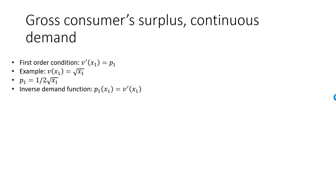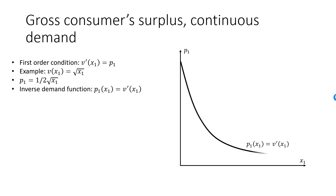This also means that if I want to draw the demand curve with p1 on the y-axis, I simply draw a graph of V prime. In my example, with V equal to square root of x1, the demand curve is the graph of 1 over 2 square root of x1. Note that since V is strictly concave, V prime must be strictly decreasing. That is, the demand curve will be strictly downward sloping as expected.